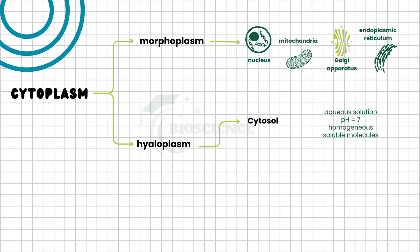The hyaloplasm consists of two subparts: the cytosol, which is the aqueous solution in which the organelles are suspended. It has a neutral pH and contains soluble molecules.